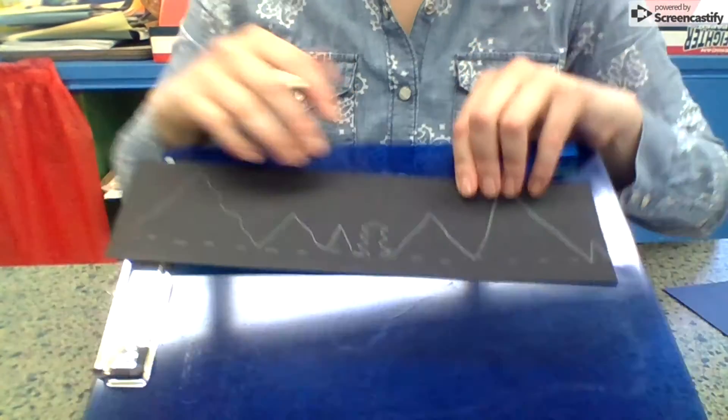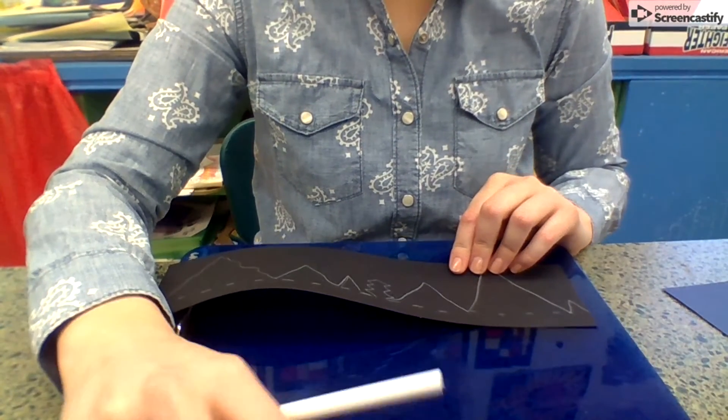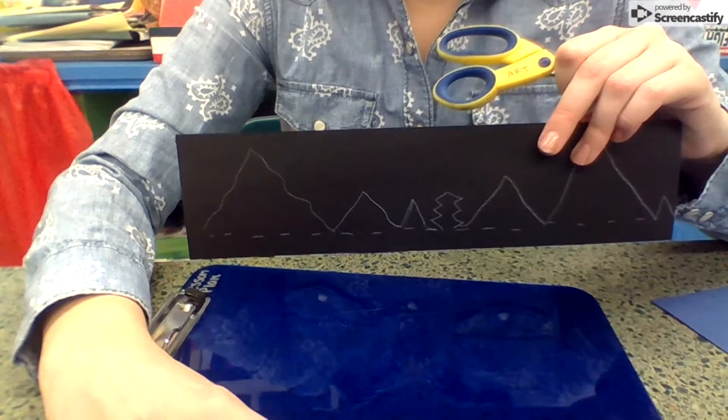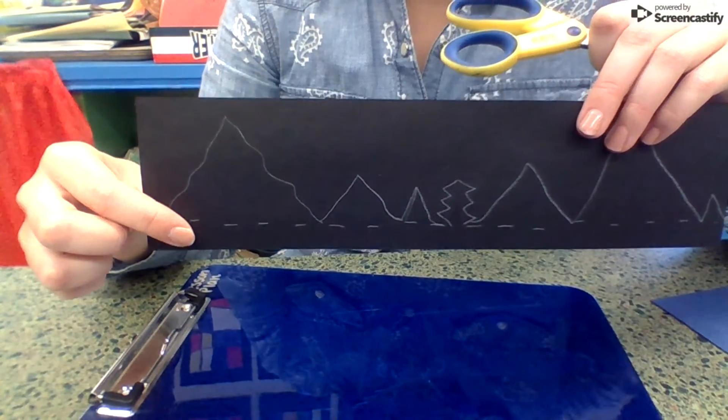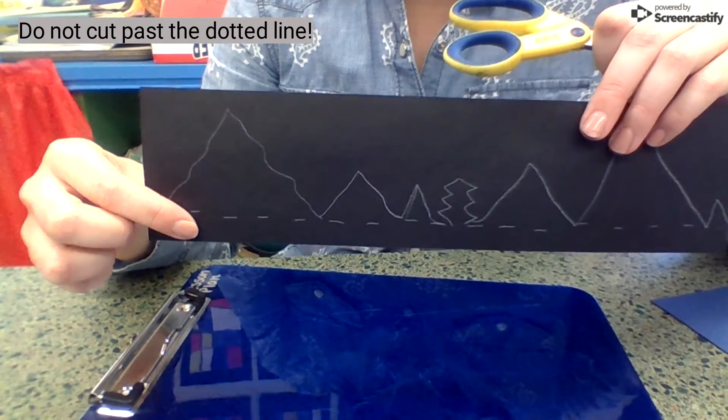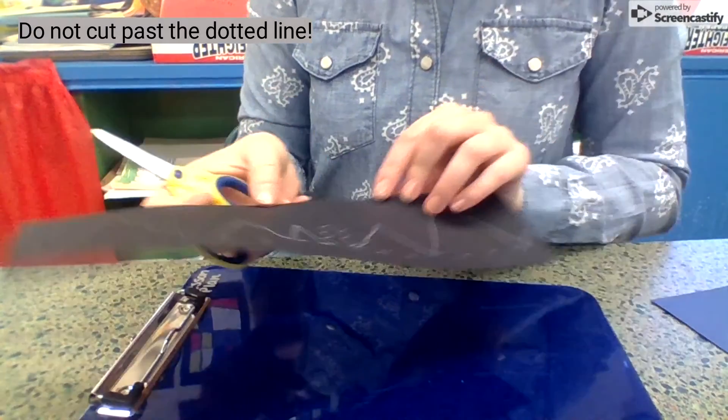Now I'm ready to cut out. So I need some scissors. When you start to cut out, you do not want to go past this dotted line. We are going to keep this all in one piece. Let me show you what I mean.